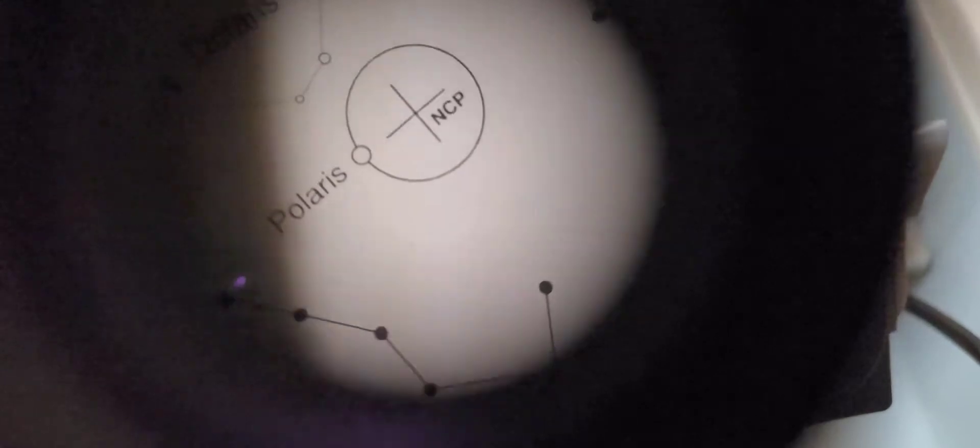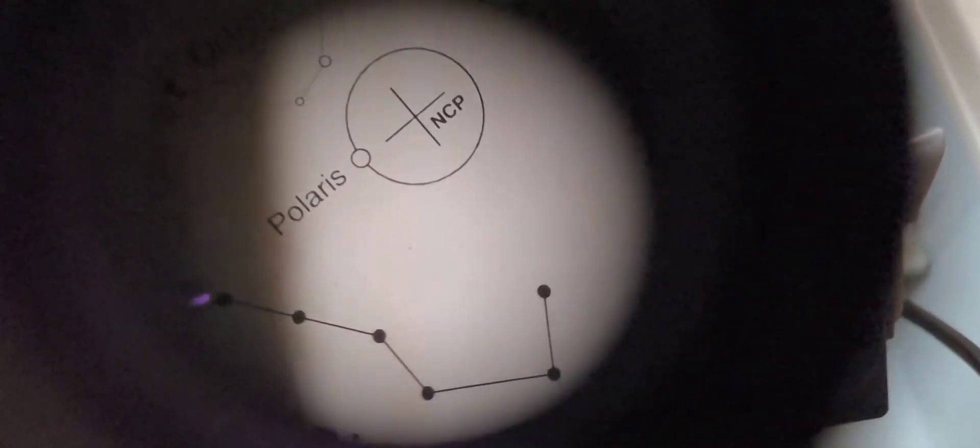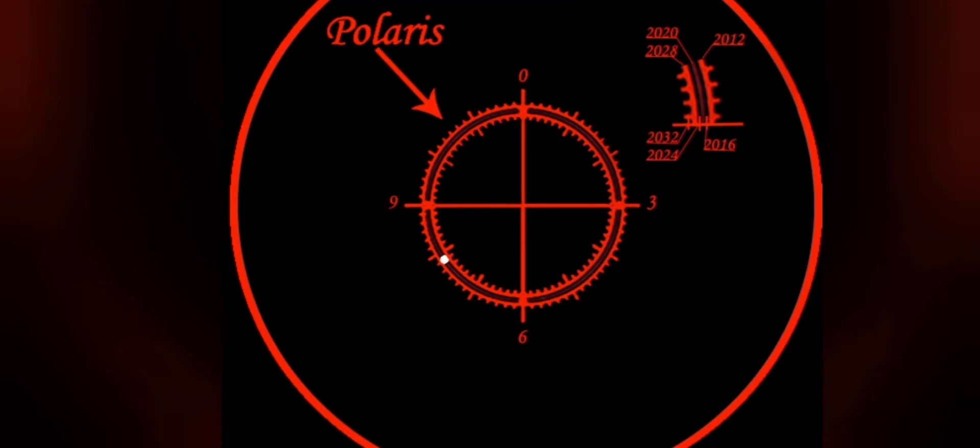On mine, wherever that circle is, is where I'm going to put Polaris. Which on yours will look like what the app shows, which is right here. You would just line Polaris up right where the app tells you to put it. But this way, you know your reticle is right where it needs to be.